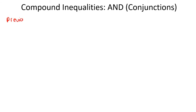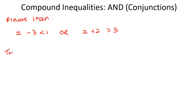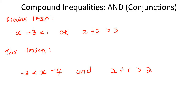In the previous lesson, the questions looked something like this — something like x minus 3 smaller than 1, and then they would say 'or', and then x plus 2 bigger than 5. That's what the previous lesson looked like. Now in this lesson, they'll ask it in two different ways. They would say something like x minus 4 bigger than something, and then they'll say 'and', and then they'll do something else.